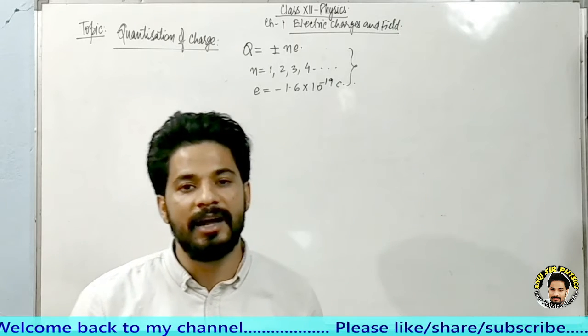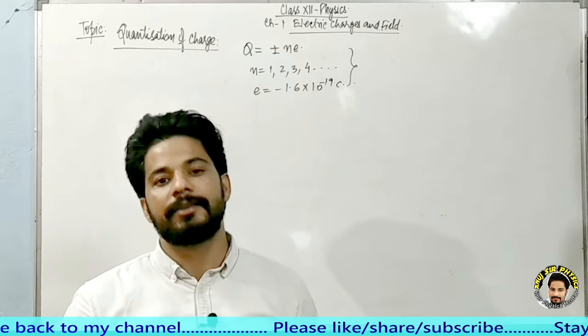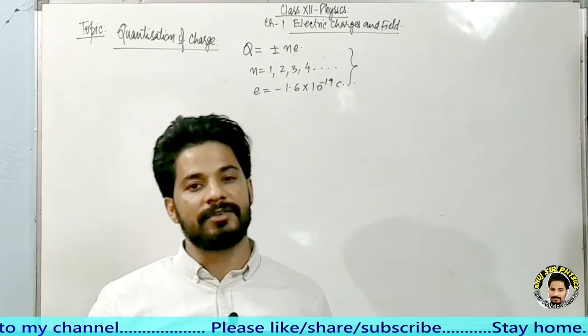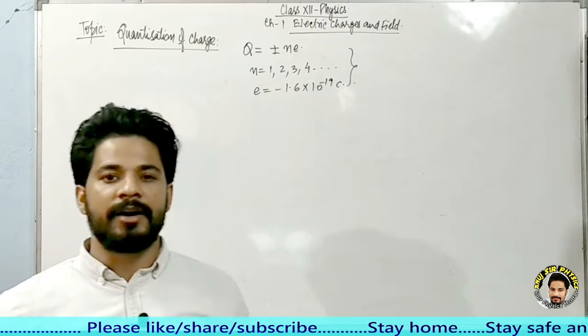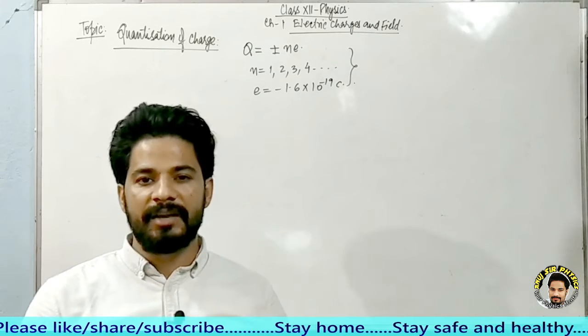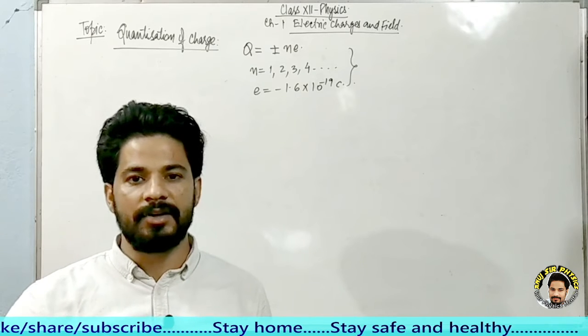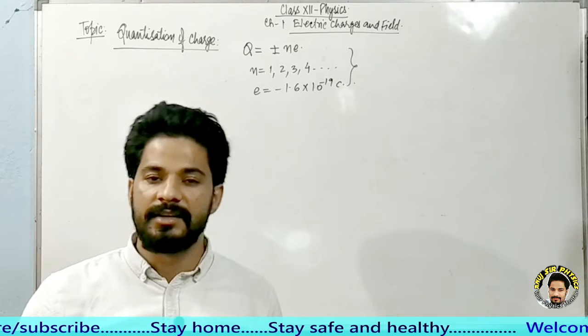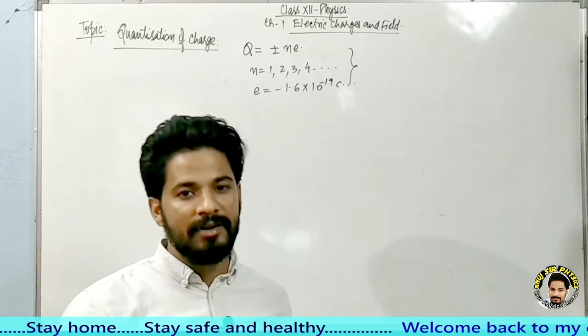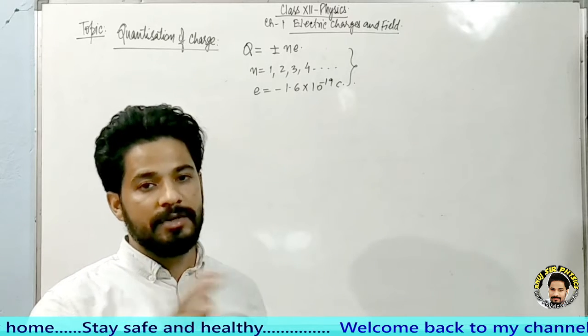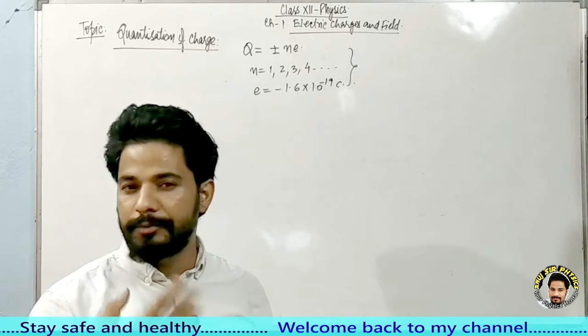Suppose somebody asks you there are how many students in your class, then your answer will be there are 35 students, there are 40 students, there are 42 students. There are a complete number of students. Is it possible that there may be 19.5 students or 20.5 students? Is it possible? Aisa possible nahi hai, ke koi bhi student aadha nahi hoga, woh complete hoga, woh poora student hoga.